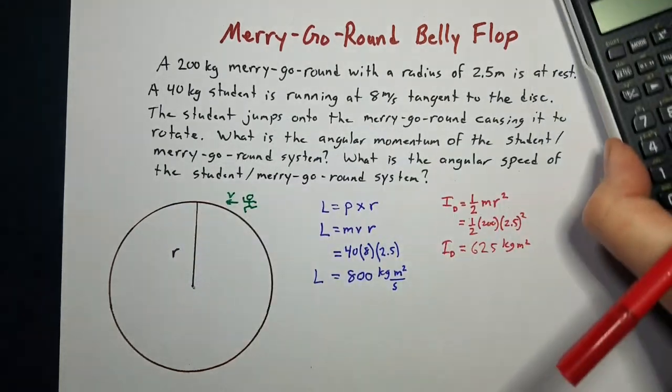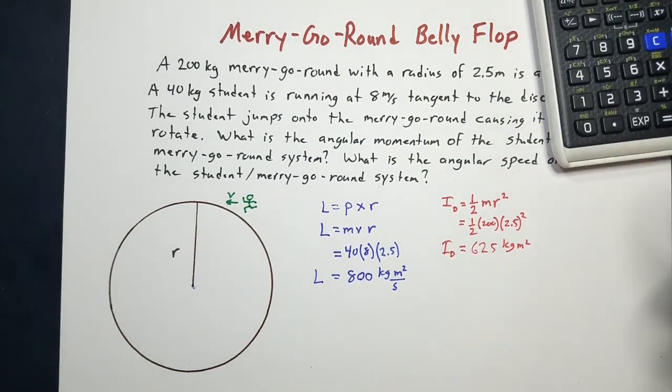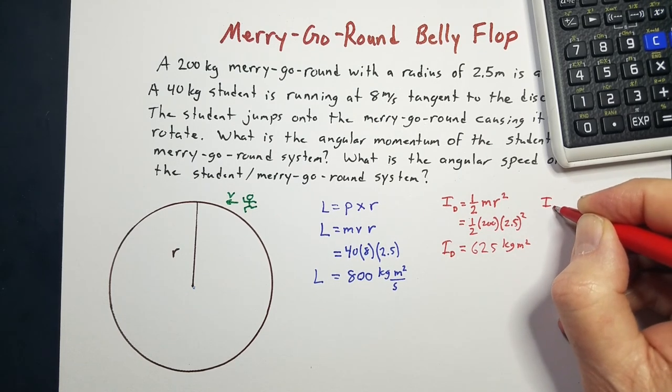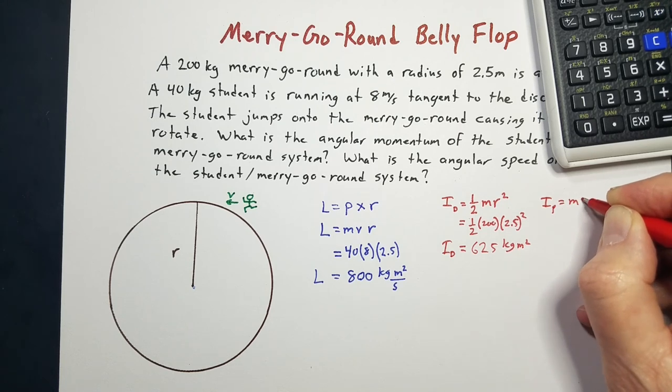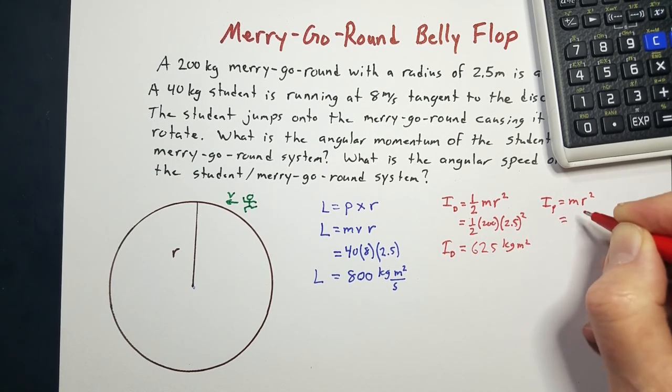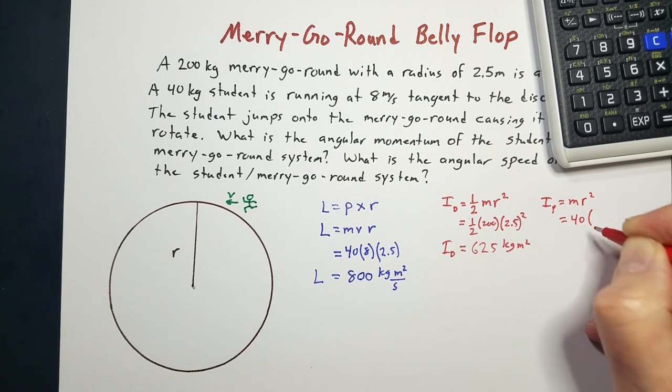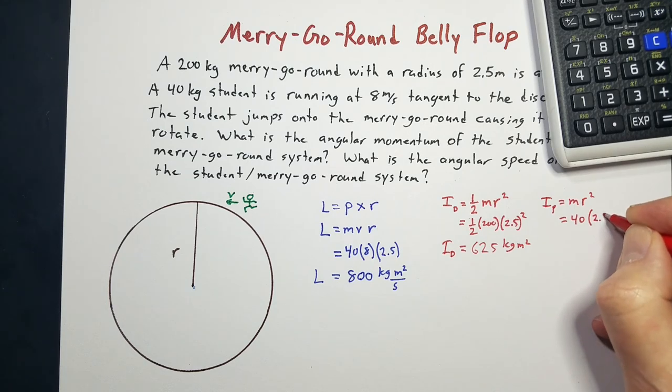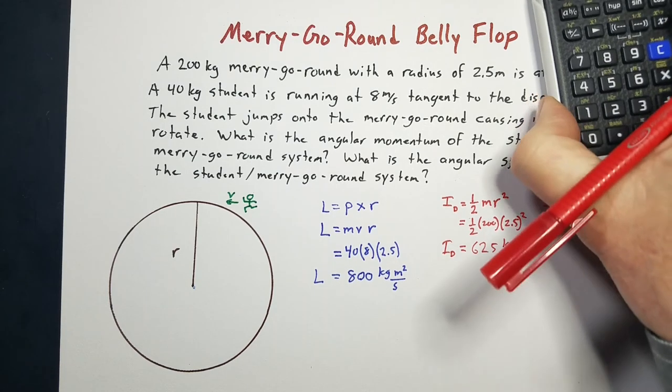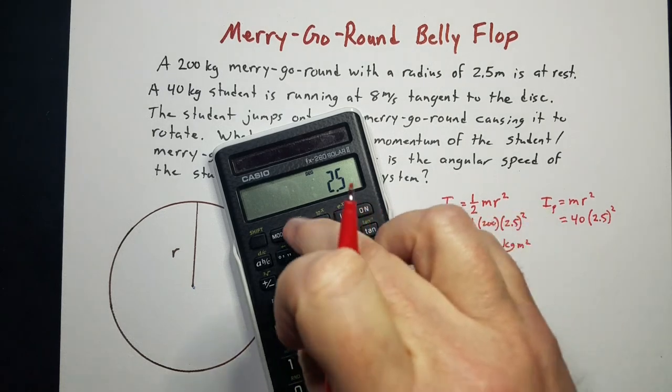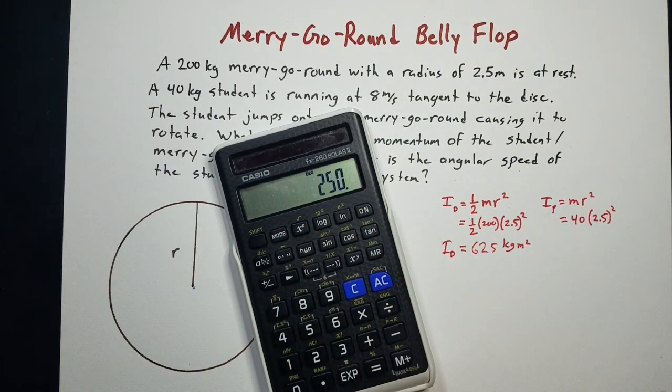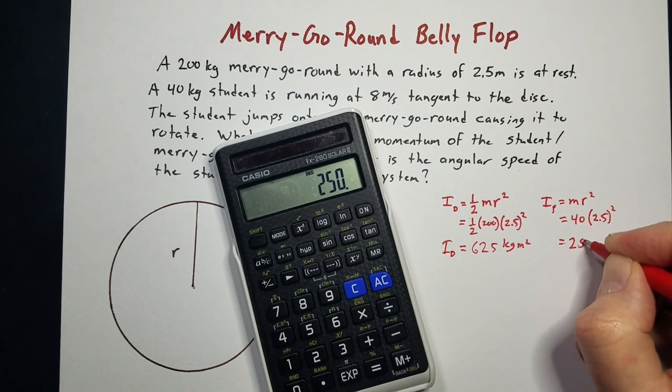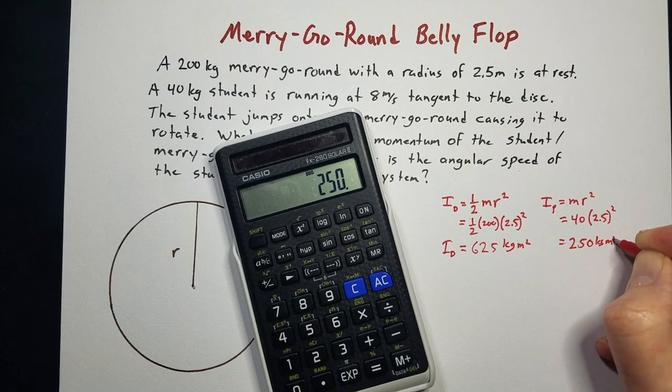But we also have to include the person. We're going to model the person as if they were a point mass. So the moment of inertia of our person is just going to be mr squared. The mass of the person is 40. They're landing 2.5 meters out from the center, so 2.5 squared. 2.5 squared times 40 gives them a moment of inertia of 250 kilogram meters squared.